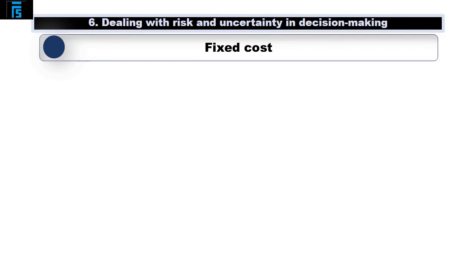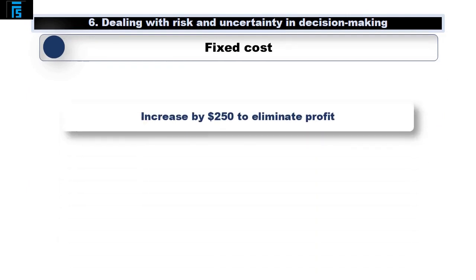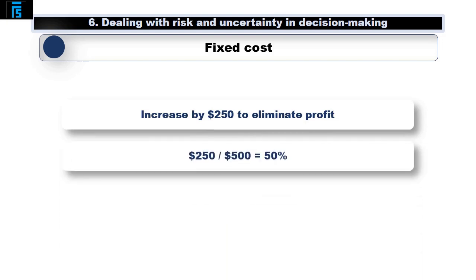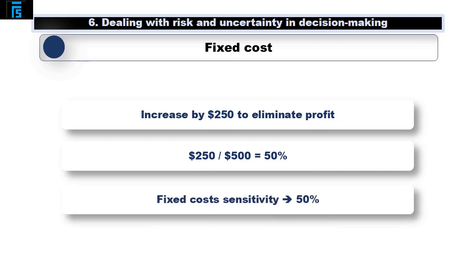Finally, fixed cost. Fixed costs would need to increase by $250 from the current $500 to eliminate the profit entirely. This is an increase of $250 over $500 is 50%. Jack is 50% sensitive to his estimate of fixed costs.